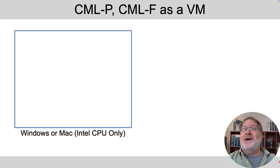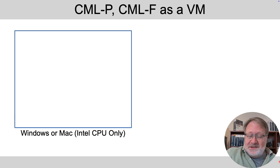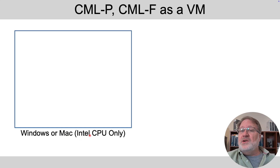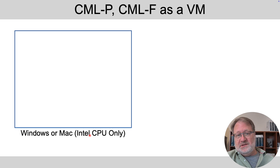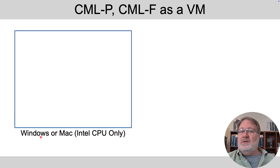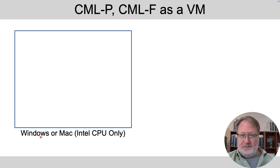Let's talk about the architecture. If you've got Windows, that's fine. If you're using a Mac, this only works if you've got an Intel CPU — newer Macs have Apple M series chips, not Intel. So if you've got an older Mac or any Windows machine, you can run CML as a VM. You can't if you've got Linux as your base operating system.